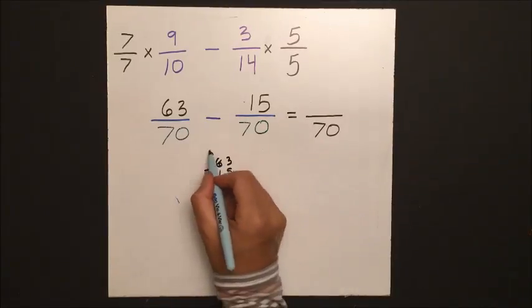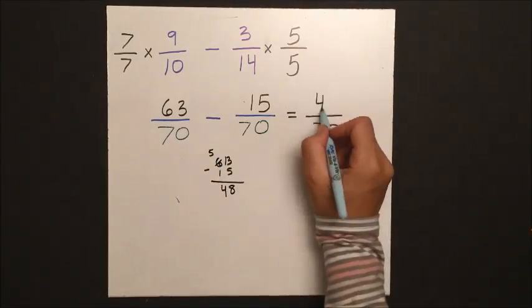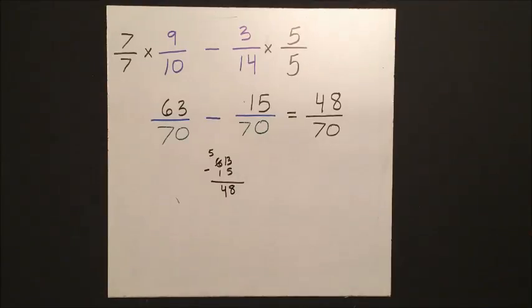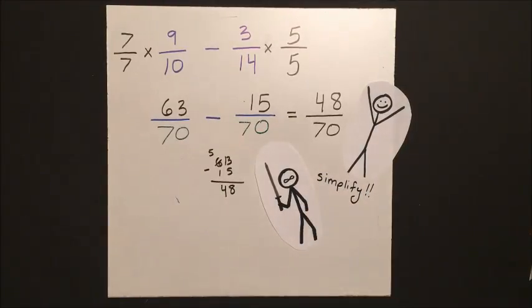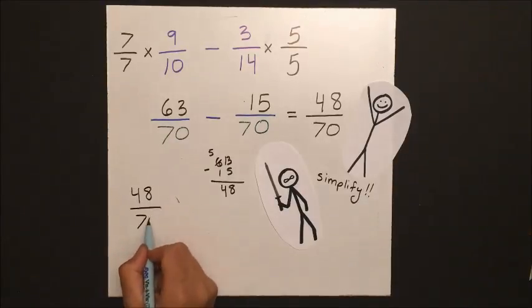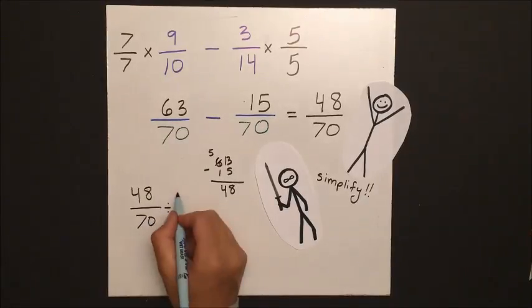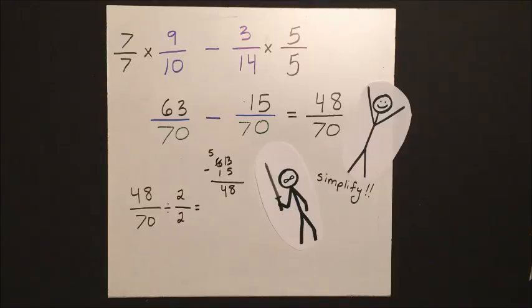And in the end, we have our answer of 48 over 70, which seems like we are done. But we're not. We have to simplify. 48 and 70 are both even numbers, which means we can divide them both by 2. So our actual answer is going to be 24 over 35.